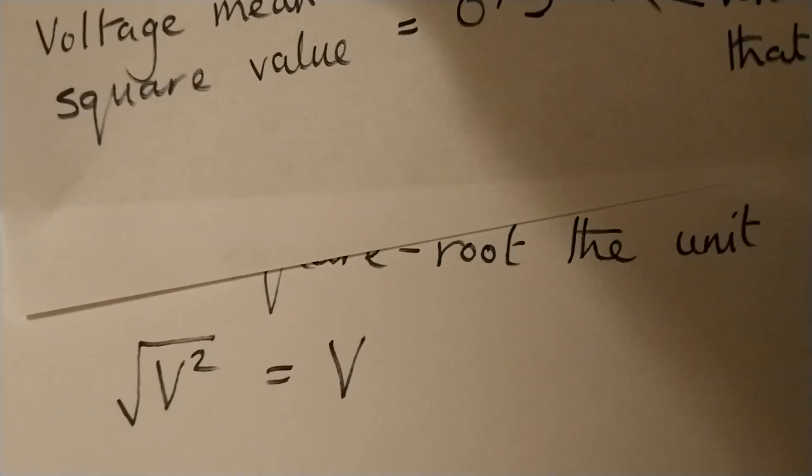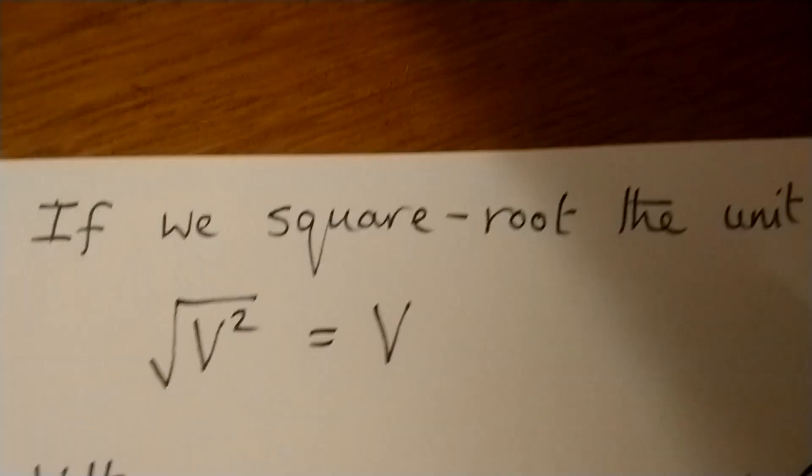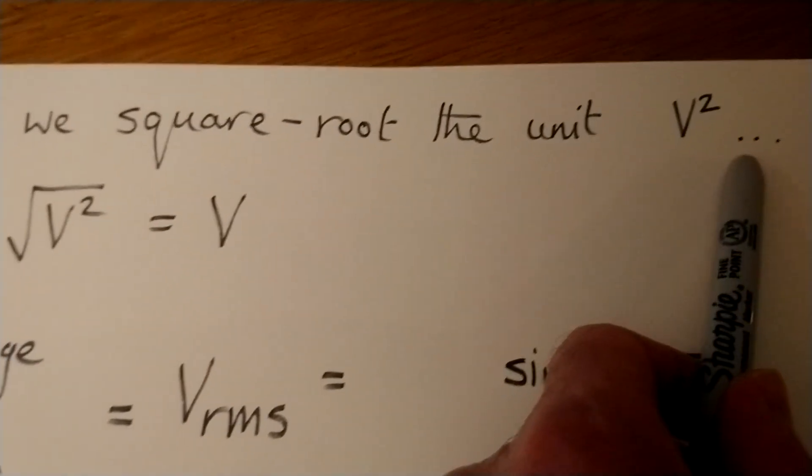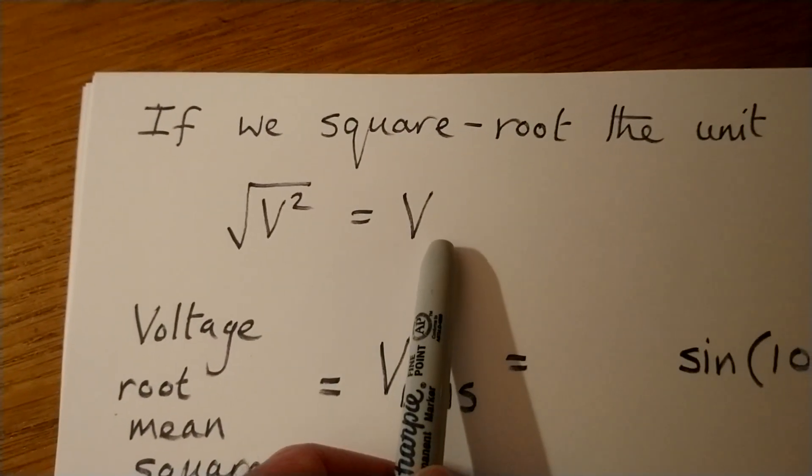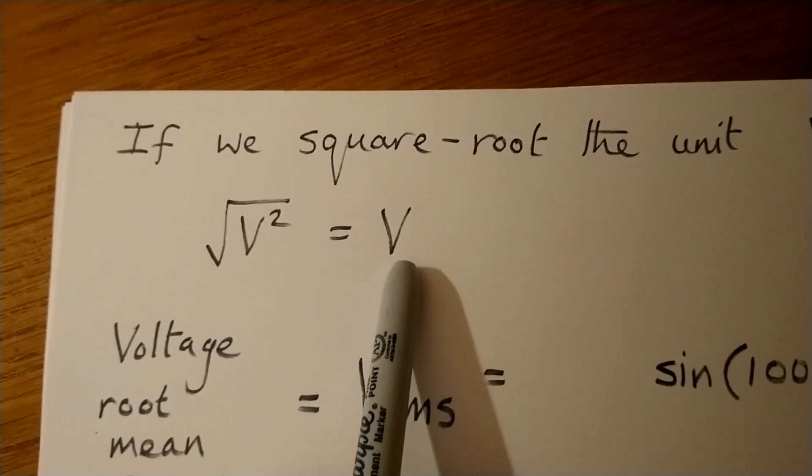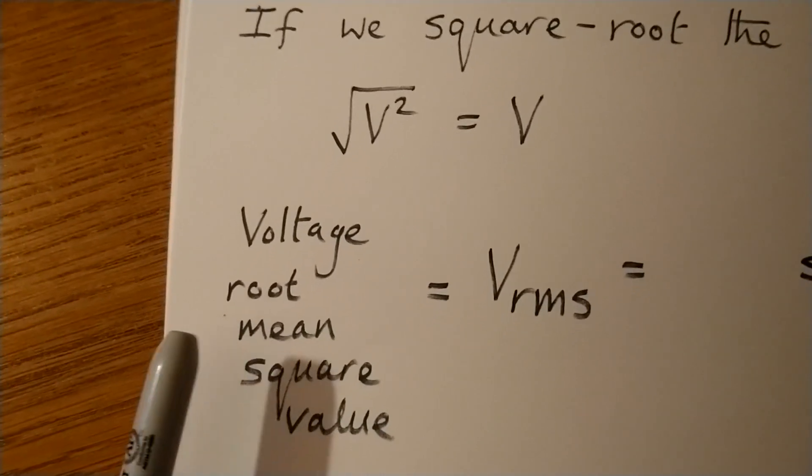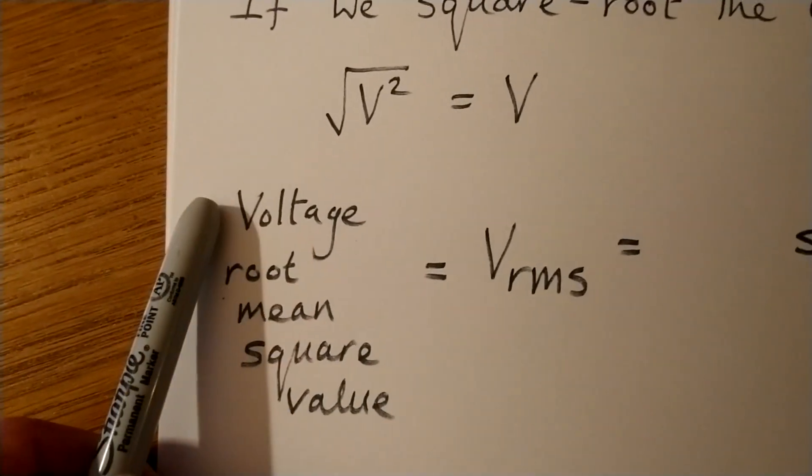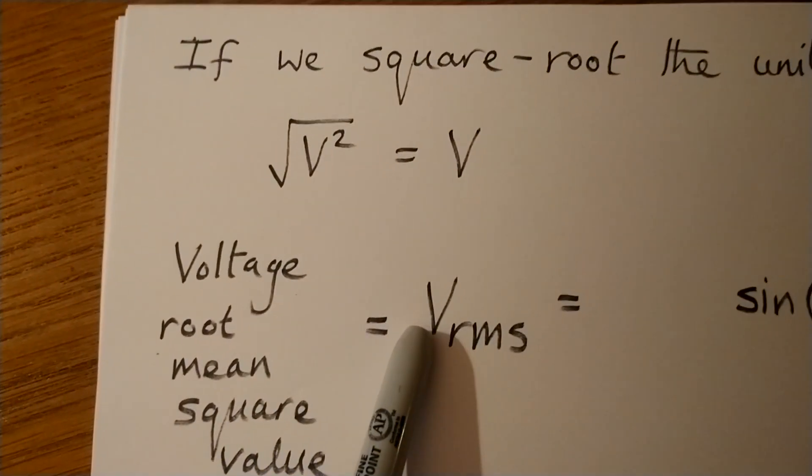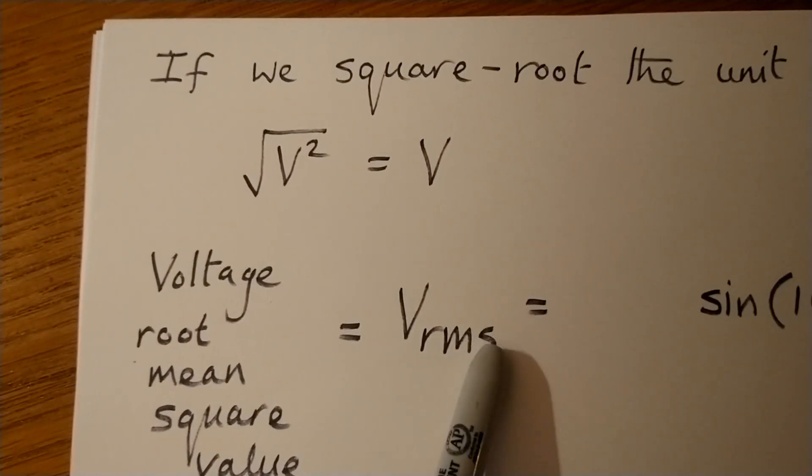So what we do is if we square root the unit V squared, then that just takes us back to volts. And obviously volts is the thing we're interested in. That was the unit of the original graph. So the thing we actually work out is the voltage root mean square value. Or in other words, V RMS, R root mean square.